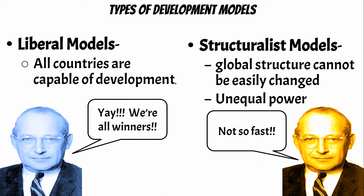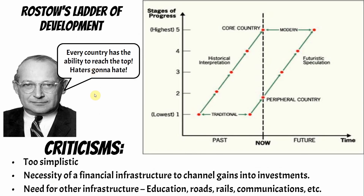So that's development — now how do we measure it? There are models, and there are two types: liberal models on the left and structural models on the right. The liberal model we're looking at now is called Rostow's Ladder of Development. It shows time on a scale from past to future and development on a scale of one to five, where five is most developed and one is least. There are certain hallmarks or indicators you'll see in a country that tell you whether it's developed, developing, or least developed.